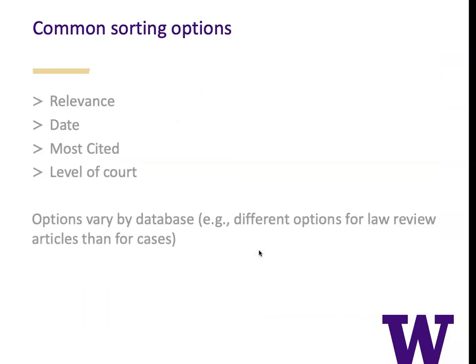But they give you other options. Most systems will let you sort by date or most cited. If you're looking at cases, they'll give you level of court. The options vary by database — for instance, you have different options for law review articles than you do for cases.